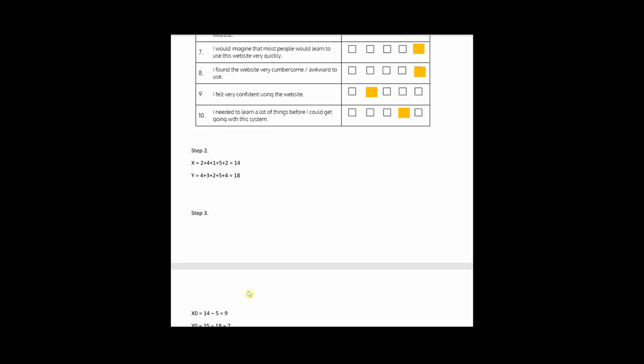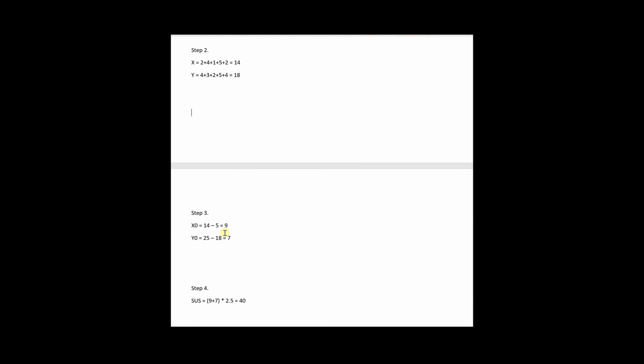Now the next step is that I am going to subtract from the sum of all the odd numbered questions. So this was my 14. I'm going to subtract 5 from 14, and I'm going to subtract 18 from 25. So I'll end up with 9 for x naught and 7 for y naught.